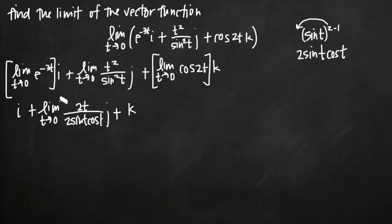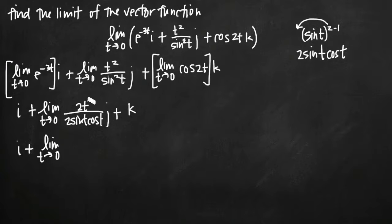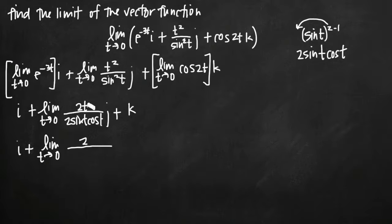If we try to evaluate the limit as t goes to zero of our j component after the first application of L'Hôpital's rule, we still get zero in our numerator and zero in our denominator because sine of zero is zero. So again we have to apply L'Hôpital's rule, taking the derivative of the numerator and denominator and replacing them with their derivatives.